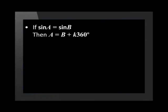You also have to remember some basic rules when solving trigonometric equations. Let's have a look at these. If sine a is equal to sine b, then a equals b plus k times 360 degrees, or a is equal to 180 degrees minus b plus k times 360 degrees.